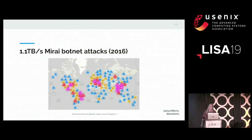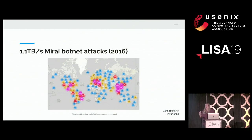If you were working in web hosting in 2016, the Mirai botnet was probably the bane of your existence. It was created by a group of teens who basically created malware and didn't fully realize what they'd done. This malware was really pervasive — it targeted IoT devices, scanned for open ports, and brute-forced common username and password credentials. It spread really quickly, creating a large botnet. To avoid culpability, they made it open source, so everyone could create their own special flavors of the Mirai botnet. At its peak, it hit 1.1 terabytes per second.